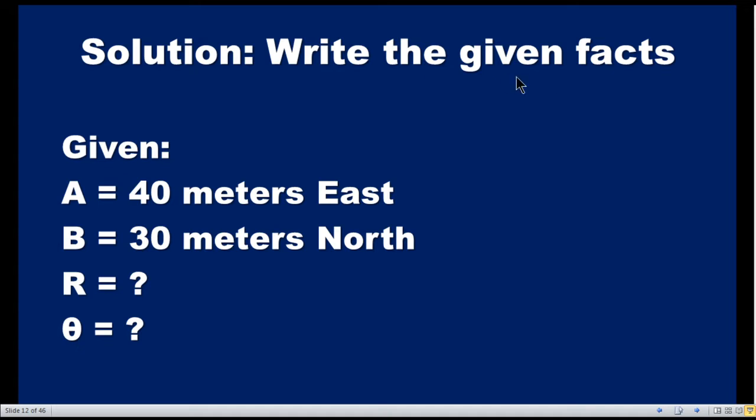So we can use the graphical method for solving this problem. Write the given facts. A man walks 40 meters east, this is vector A. A man walks 30 meters north, this is vector B. So what is the resultant R and the vector angle theta?